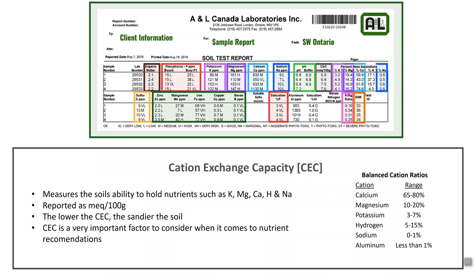The next item is cation exchange capacity, or CEC. It measures the soil's ability to hold nutrients — most of which are cations such as potassium, magnesium, calcium, hydrogen, and sodium. It is reported as milliequivalents per 100 grams of soil. The lower the CEC, the lighter and sandier the soil texture. It is very important to consider when making nutrient recommendations. Target ranges on the CEC are: calcium at 60 to 80 percent, magnesium at 10 to 20 percent, potassium at 3 to 7 percent, hydrogen between 5 and 15 percent.